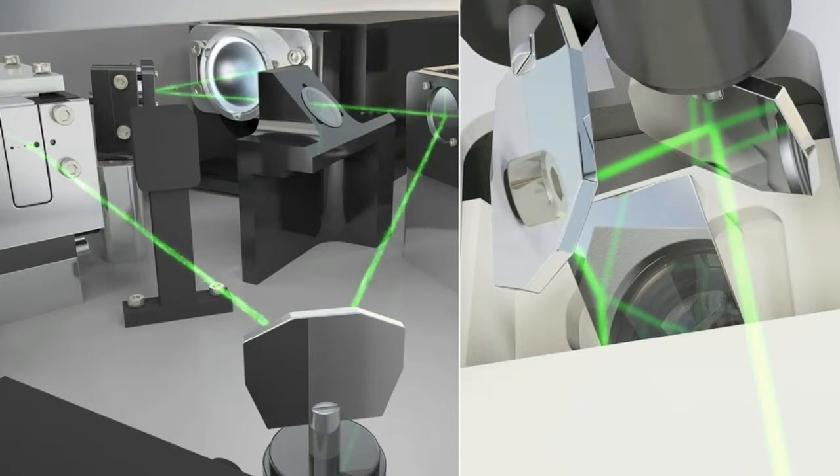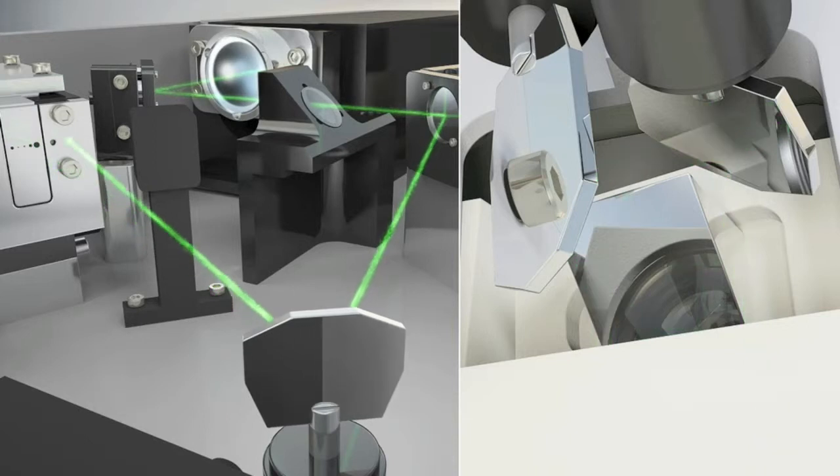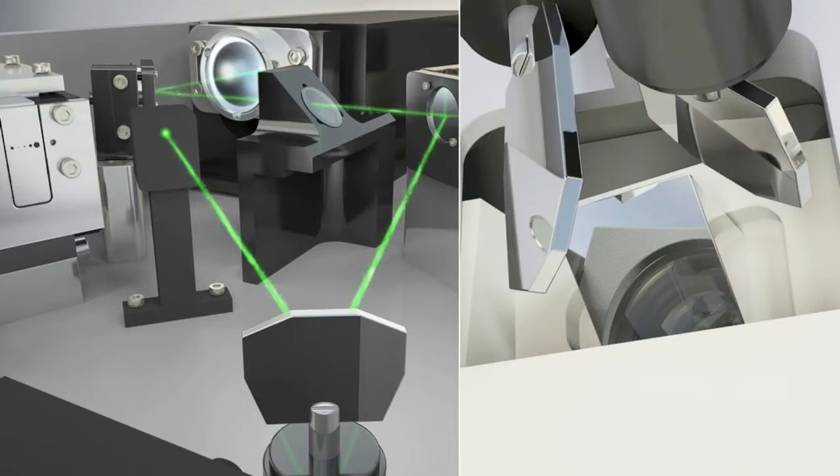While the galvo in the laser console is directing the beam away from the fiber, the two slit lamp galvos move into position for the next pulse in the pattern.